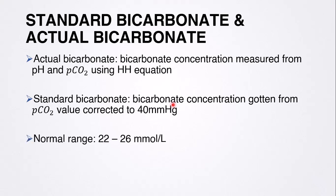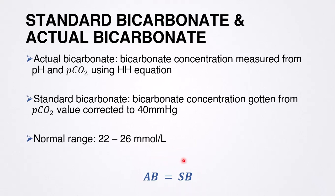The normal range for bicarbonate in blood is 22 to 26 mmol per litre — and take note, this refers to arterial blood, not venous blood. Venous blood will have a higher concentration of bicarbonate. For a normal healthy individual, actual bicarbonate should equal standard bicarbonate, meaning the difference between actual and standard bicarbonate should be zero.